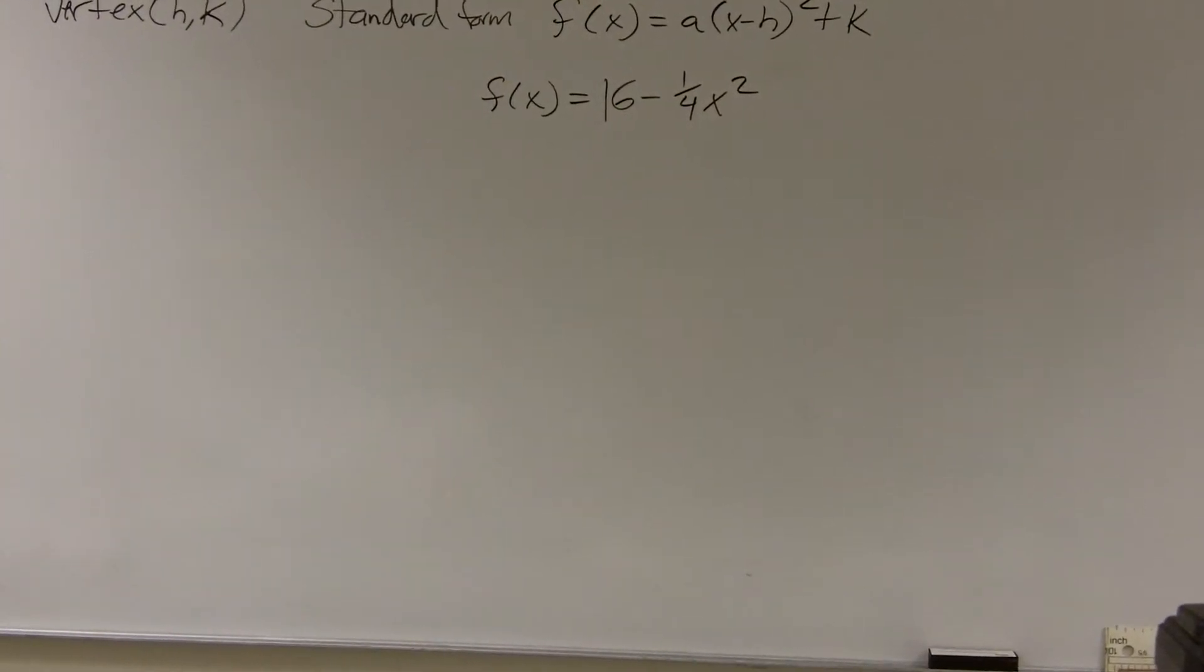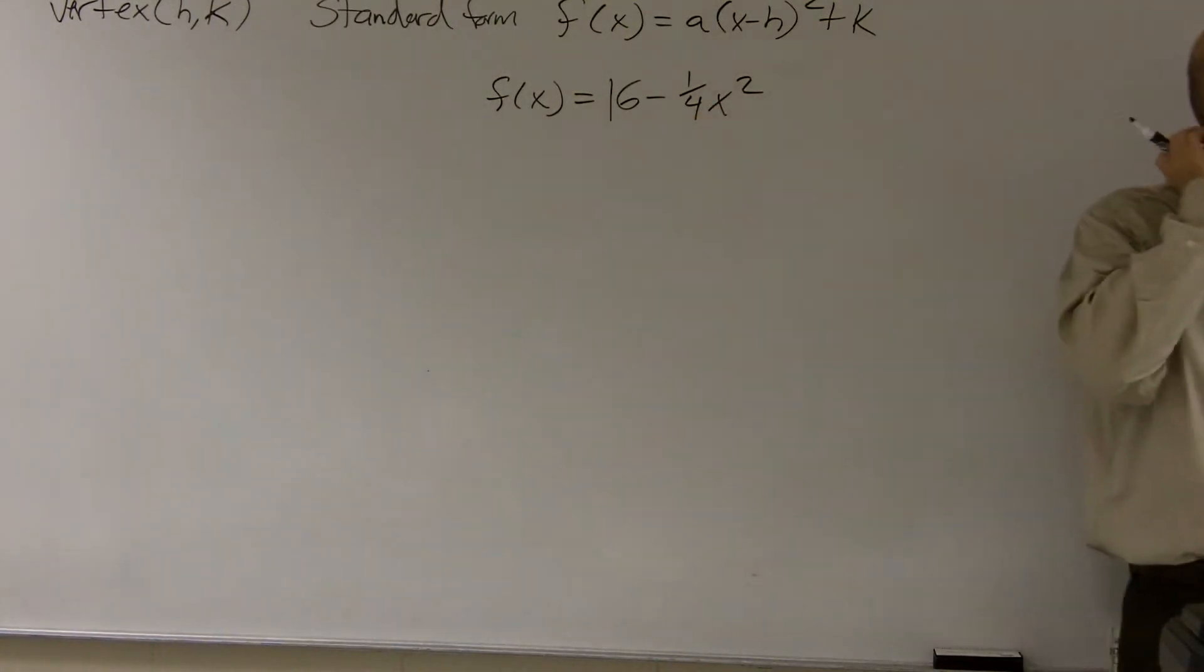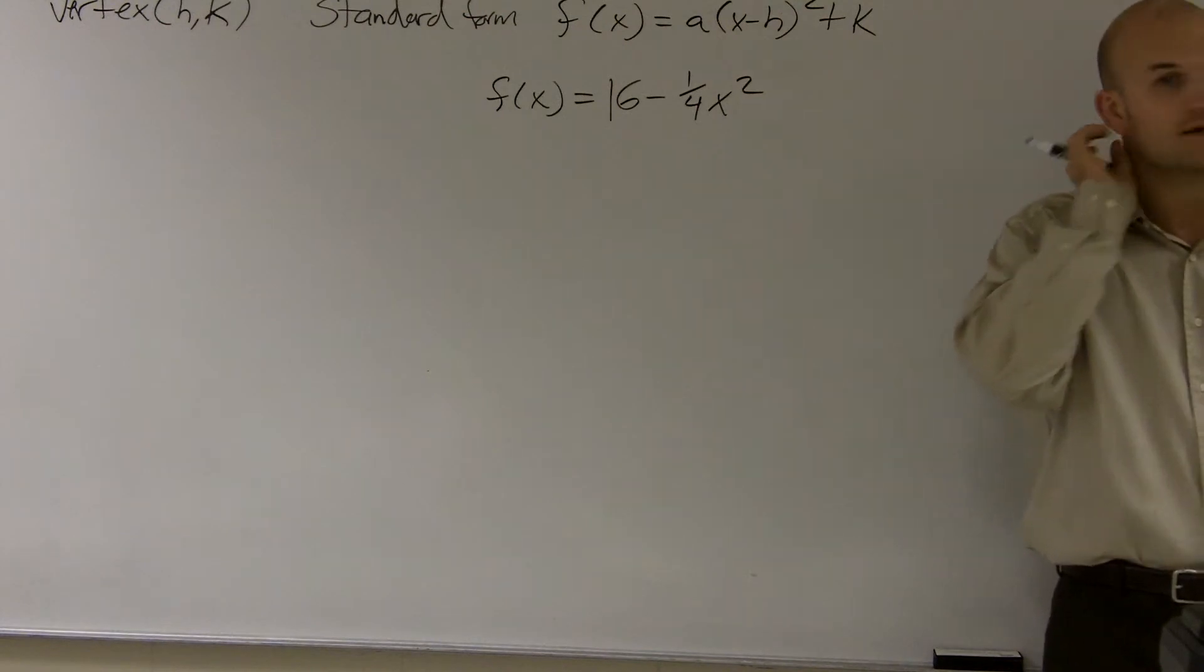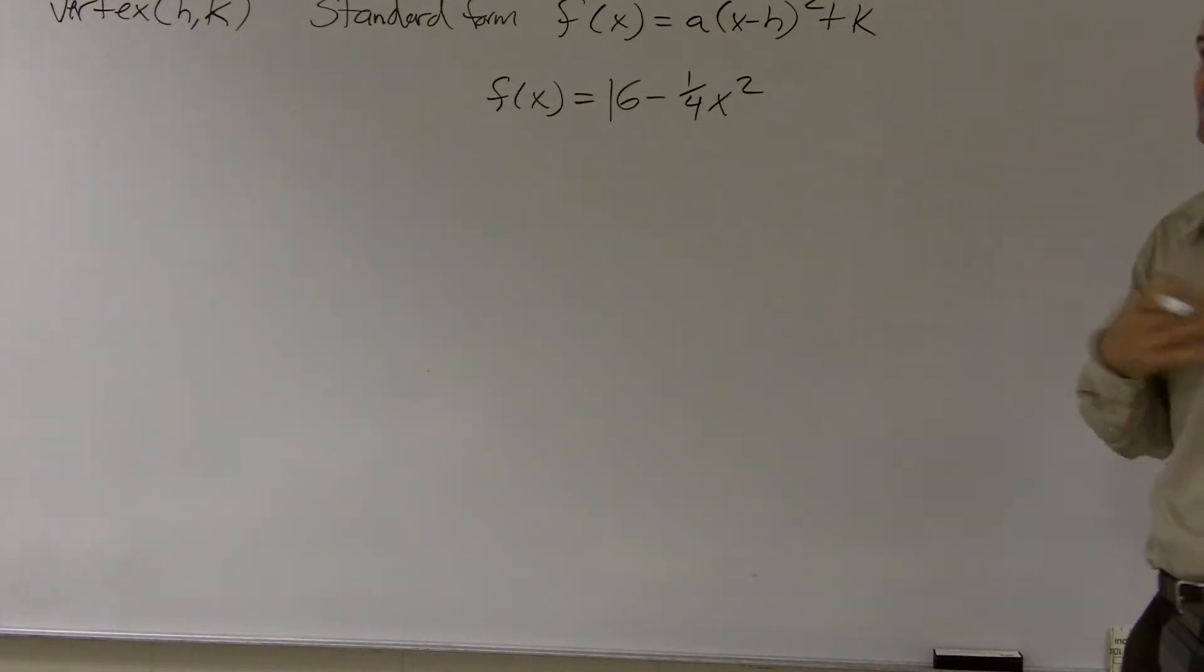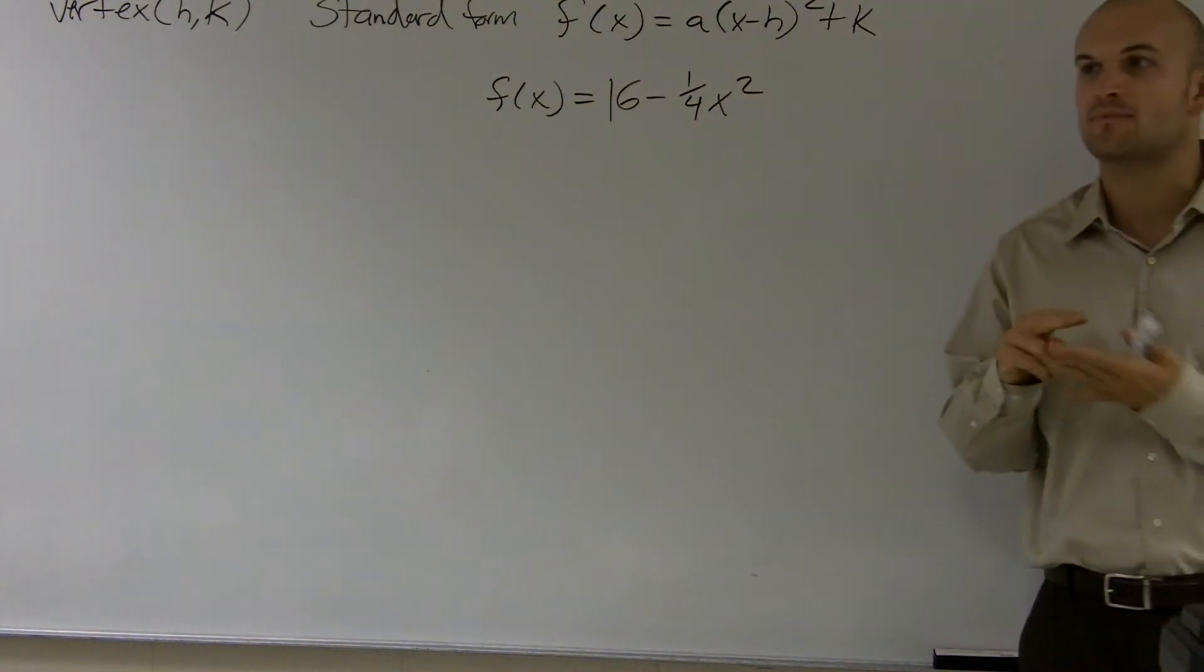All right. On this problem, it says 16 minus one-fourth x squared. So what we need to do is it's asking us to graph the problem, and it's also telling us to find the vertex and the y-intercepts. There's a couple things we're going to do for every one of these problems. You just need to follow a step-by-step process.